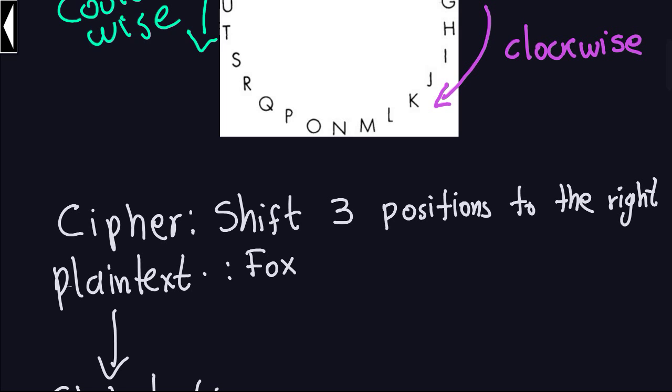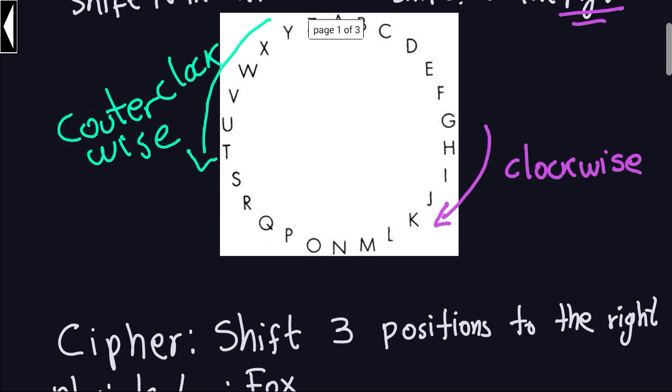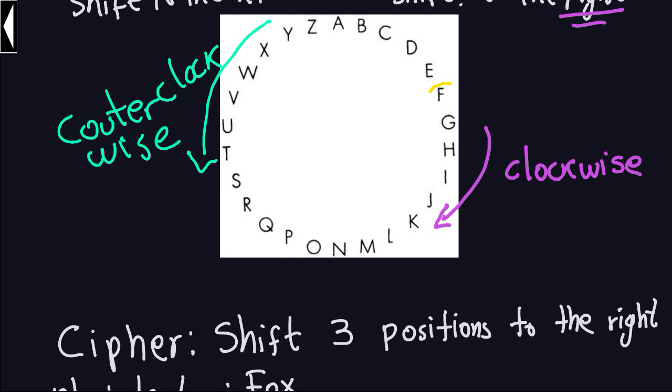So we start with the letter F. So F is right here. I move three clockwise because that's the translation from moving to the right here. So it's going to be one, two, three. It's exactly the same we got last time. So F goes into I.